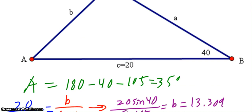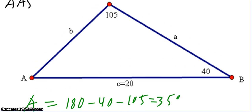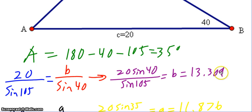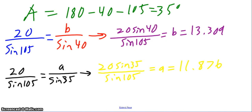First, I found angle A: since all angles in a triangle add up to 180°, angle A is 180 minus 40 minus 105, which is 35°. Then I found side b: 20 over sine(105°) equals b over sine(40°), so b equals 13.309. For side a, I used the given values again — 20 over sine(105°) equals a over sine(35°), giving a equals 11.876. Always use given values to avoid rounding errors.